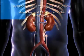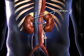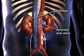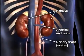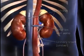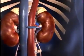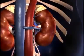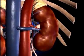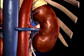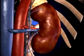The renal system consists of the kidneys, the connecting arteries and veins, and the urinary tract. The kidneys are paired, bean-shaped organs lying outside the peritoneal cavity in the back of the upper abdomen, one on each side of the vertebral column.